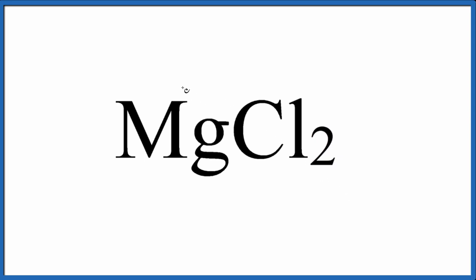So we have magnesium, and it's in Group 2. That has a plus 2 oxidation number. In fact, all of the elements in Group 2 are going to be plus 2. Chlorine is usually minus 1. We have 2 chlorines, so 2 times minus 1, that's minus 2. And if we add our plus 2 and minus 2 together, we get zero. And that's like we said — this is a neutral compound, so they need to add up to be zero.